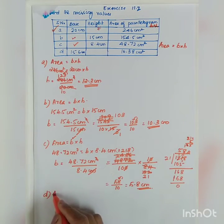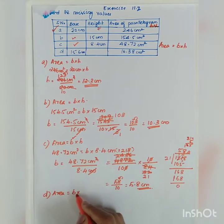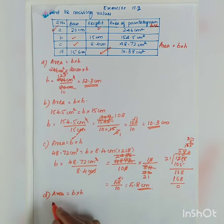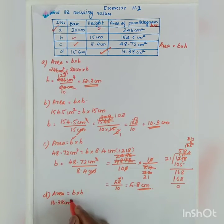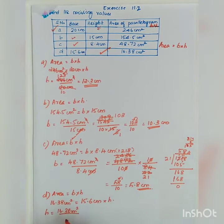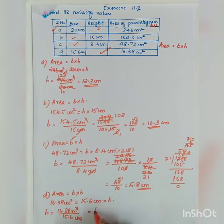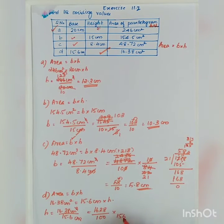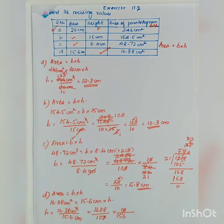Now Part D: area equals base into height. Here the base is given and we have to find the height. The area is 16.3 centimeter square and the base is 15.6 centimeter. So height equals 16.3 centimeter square divided by 15.6 centimeter. Again we must be careful with decimal division, so we convert to whole numbers.